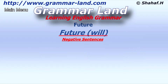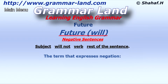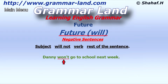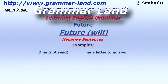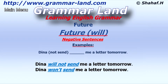Negative sentences: the sentence starts with the subject, followed by 'will not,' then a verb in its basic form, followed by the rest of the sentence. The term that expresses negation is 'will not.' The shortcut of 'will not' is 'won't.' We always use 'will not' or 'won't,' no matter what the subject is. For example: 'Danny won't go to school next week.' More examples: 'Dina will not send me a letter tomorrow,' or 'Dina won't send me a letter tomorrow.' We use 'won't' or 'will not,' and the verb 'send' stays as it is.